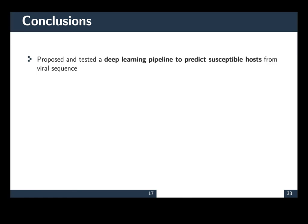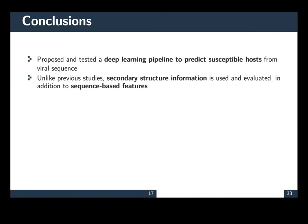To conclude, we proposed and tested a deep learning pipeline to predict susceptible host from viral sequence. We believe that it's the first work on this scale. Unlike previous studies, we've made use of secondary structure information, as well as sequence information. The use of secondary structure was justified by the fact that they're known to play important biological roles.